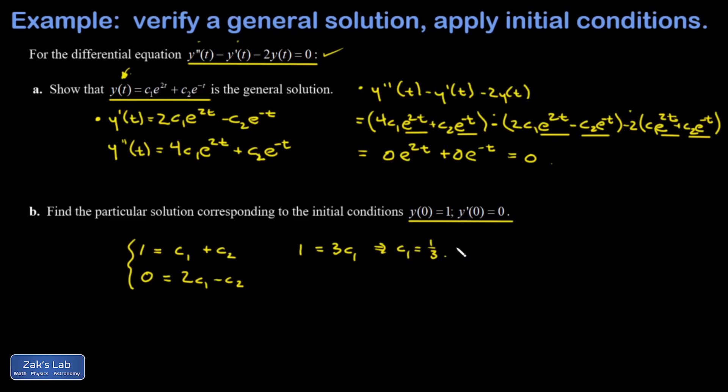Then I can plug back into the first equation: 1 is equal to c₁, that's 1/3, plus c₂. So this means c₂ is 2/3. Finally, I have to actually write down what this particular solution is—so that's the general solution with the constants replaced with the values that are going to satisfy the initial conditions.